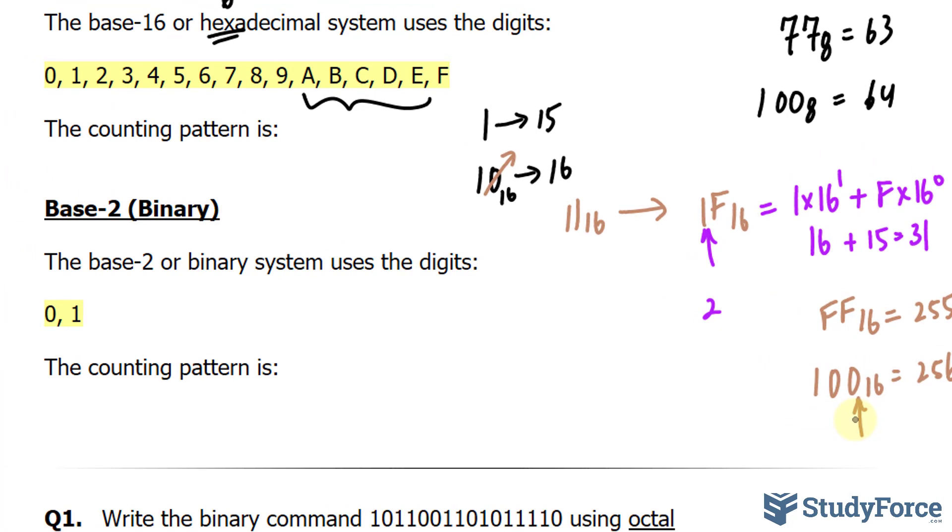Now with the binary system, this one is interesting because we only have two digits to work with, 0 and 1. Of course, to write down 1 is easy, you simply write down 1.